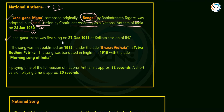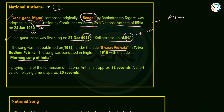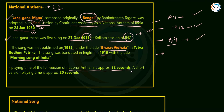Jan Gan Man was first sung on 27th December 1911 at the Kolkata session of the Indian National Congress. It was first published in 1912 under the title 'Bharat Vidhata' in Tatva Bodhini Patrika. In 1919, it was first translated into English as 'Morning Song of India.' The approximate time to sing the full version is 52 seconds, and the short version takes 20 seconds.